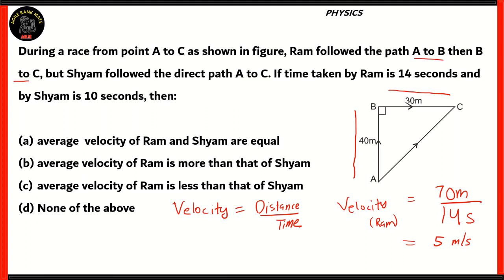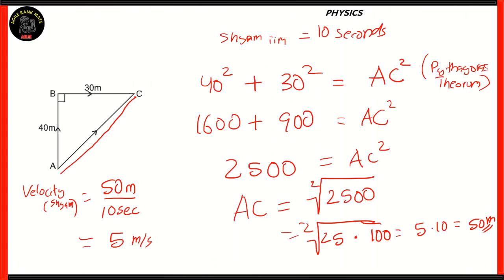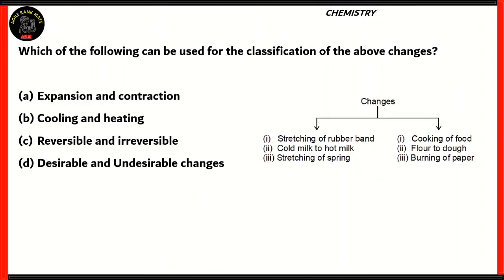So the velocity of Ram is 5 meters per second and the velocity of Shyam is also 5 meters per second. Option B says Ram's average velocity is more than Shyam's — that's incorrect. Option C says Ram's is less — also incorrect. The correct option is A: average velocity of Ram and Shyam are equal.